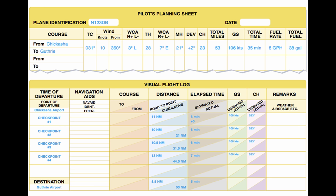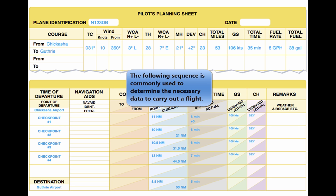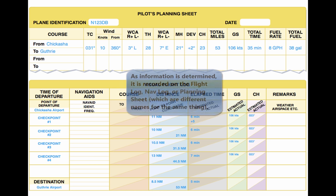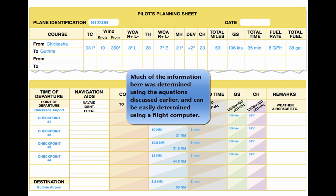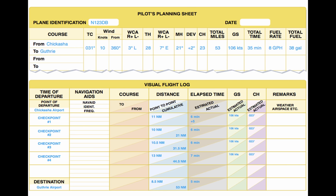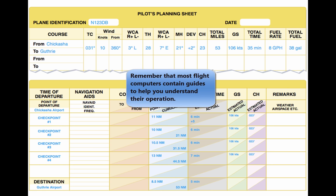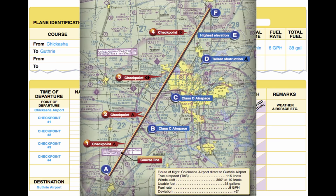Steps in charting the course. The following is a suggested sequence for arriving at the pertinent information for the trip. As information is determined, it may be noted as illustrated in the example of a flight log. Where calculations are required, the pilot may use a mathematical formula or a manual or electronic flight computer. First, draw a line from Chickasha Airport, Point A, directly to Guthrie Airport, Point F. The course line should begin at the center of the airport of departure and end at the center of the destination airport.